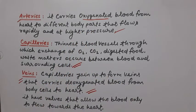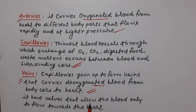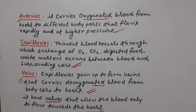Deoxygenated blood — unlike oxygenated blood which is oxygen-rich — is rich in carbon dioxide and other impurities. The veins have valves that allow blood to flow only towards the heart, preventing deoxygenated blood from flowing back to other body cells.